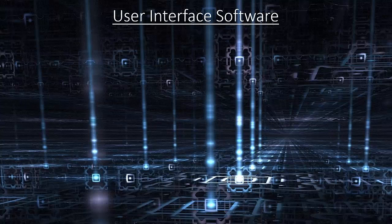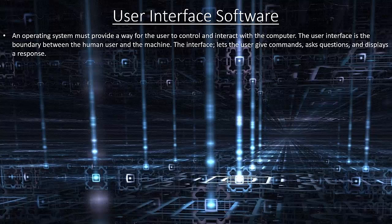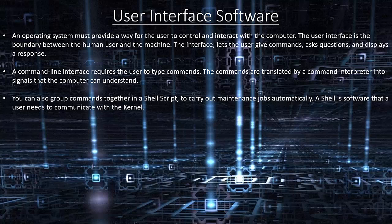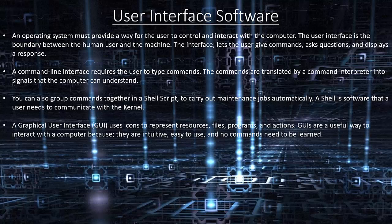User interface software. An operating system must provide a way for the user to control and interact with the computer. The user interface is the boundary between the human user and the machine; it lets the user give commands, ask questions and displays a response. A command line interface requires the user to type commands, which are translated by a command interpreter into signals the computer can understand. You can also group commands together in a shell script to carry out maintenance jobs automatically. A shell is software that a user needs to communicate with the kernel. A graphical user interface, GUI, uses icons to represent resources, files, programs and actions. GUIs are intuitive, easy to use, and no commands need to be learnt. The GUI interacts with the kernel and allows access to everyday features.